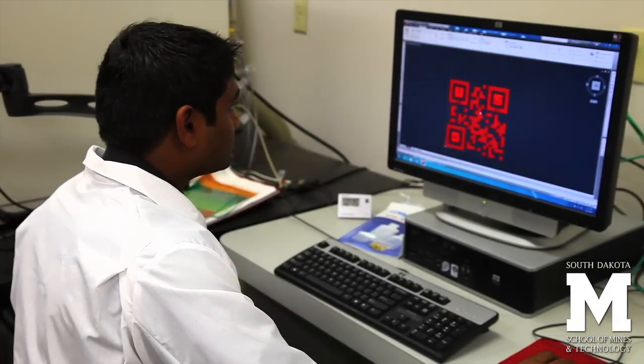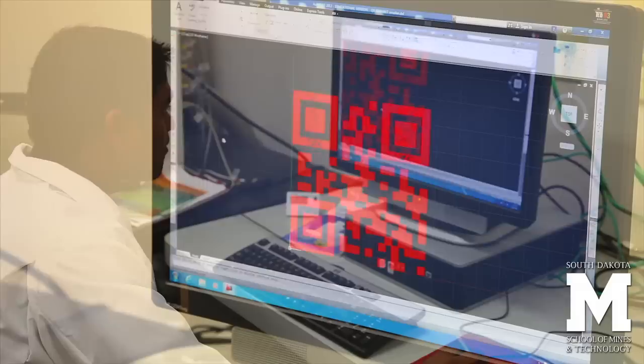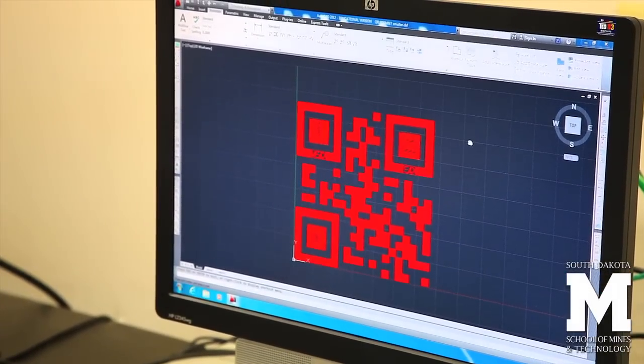We need to make this QR code using an AutoCAD file and then make it compatible with the Optomic RSL Jet. That's our printing machine up at School of Mines.